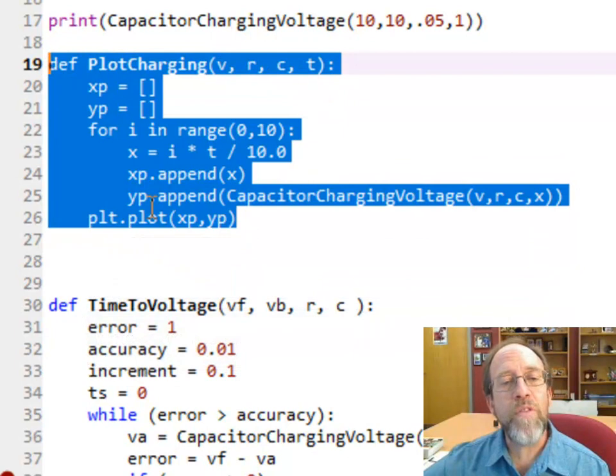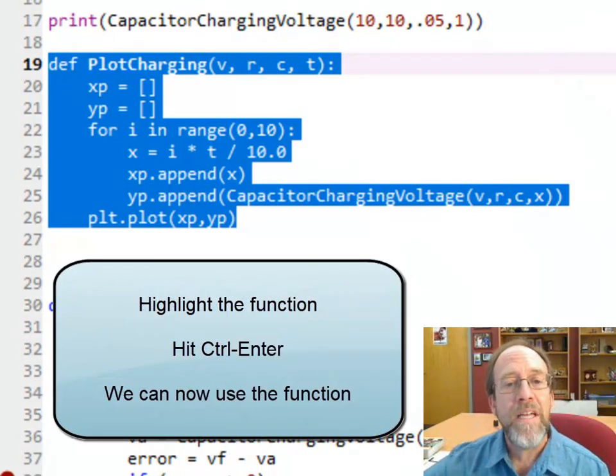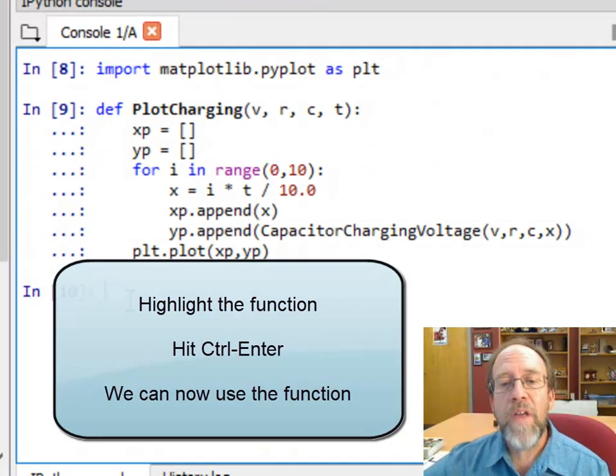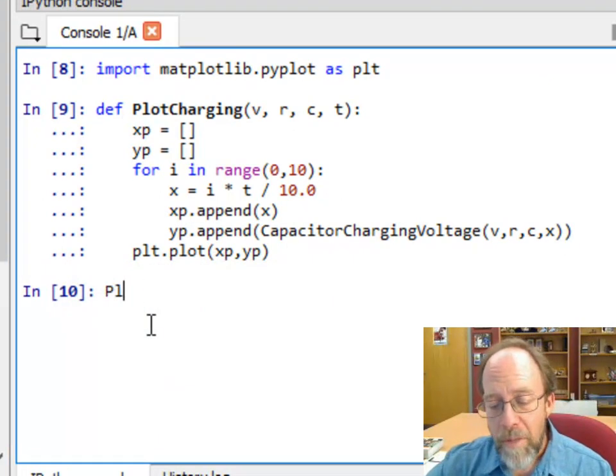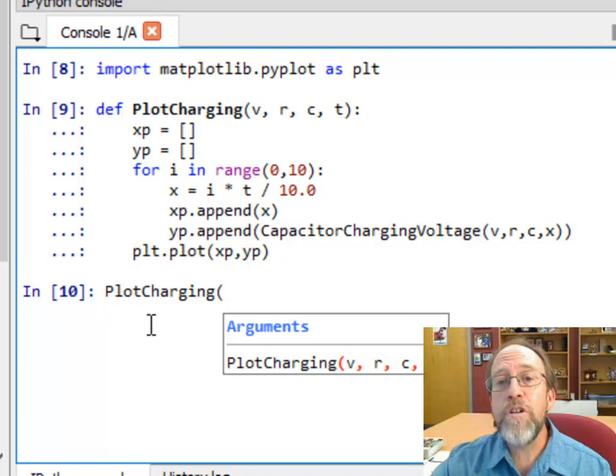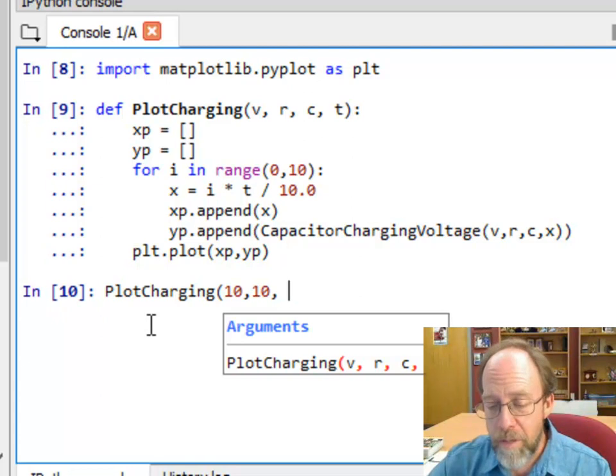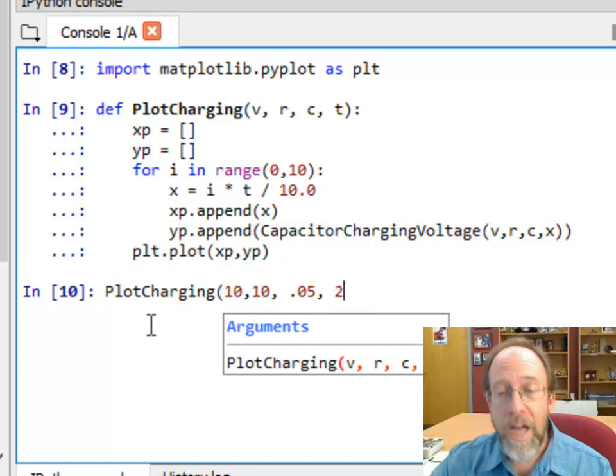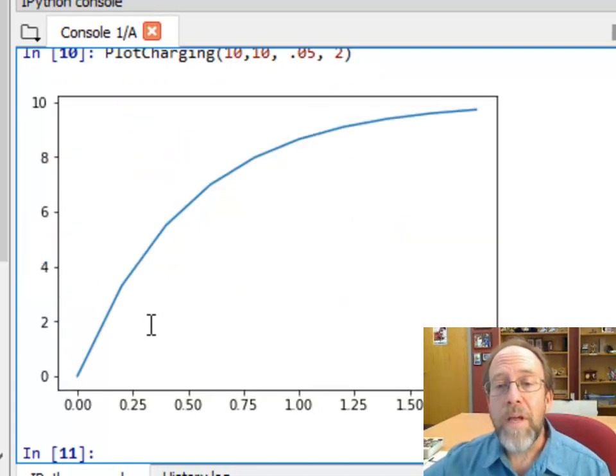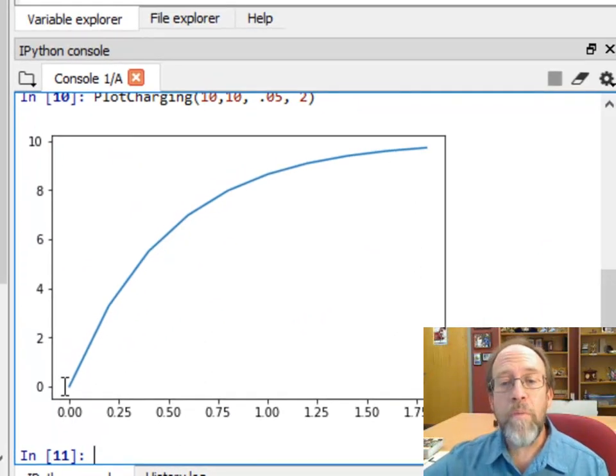First I've got to actually put this function in the system. Notice I'm doing this piece by piece. I'm going to hit ctrl enter and that's now been input there. Here's something that's really kind of neat that I can do. PlotCharging - the values I had used would be the same values I had before. I'm going to use a voltage of 10, a resistance of 10. By the way, the units on this are important, but I'm just assuming everything is in its native units - voltage in volts, resistance in ohms, capacitance in farads, and time in seconds. I'm going to do a capacitance of 0.05 and I want to plot it up to two seconds. And look at that, I get a nice beautiful plot.